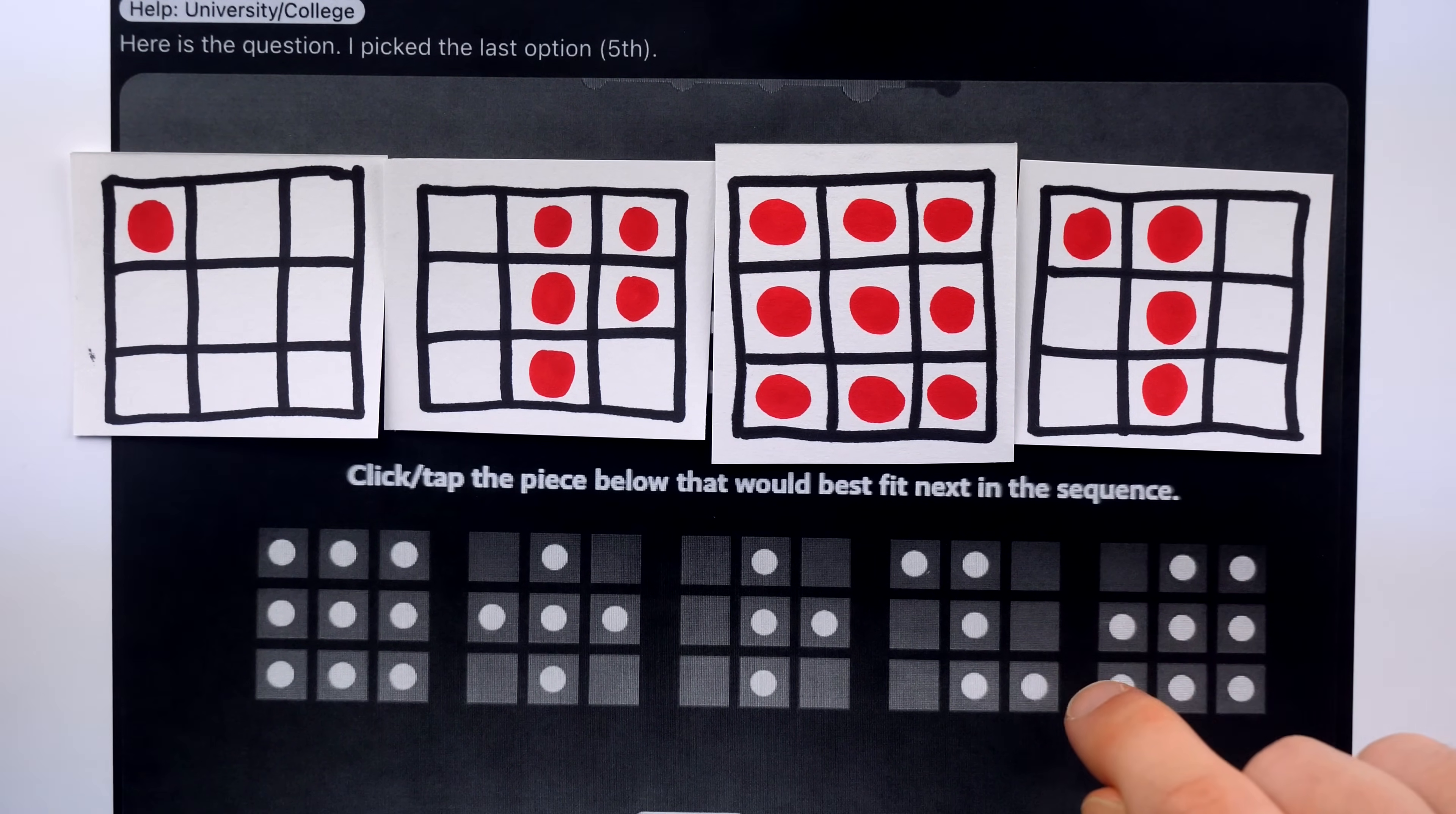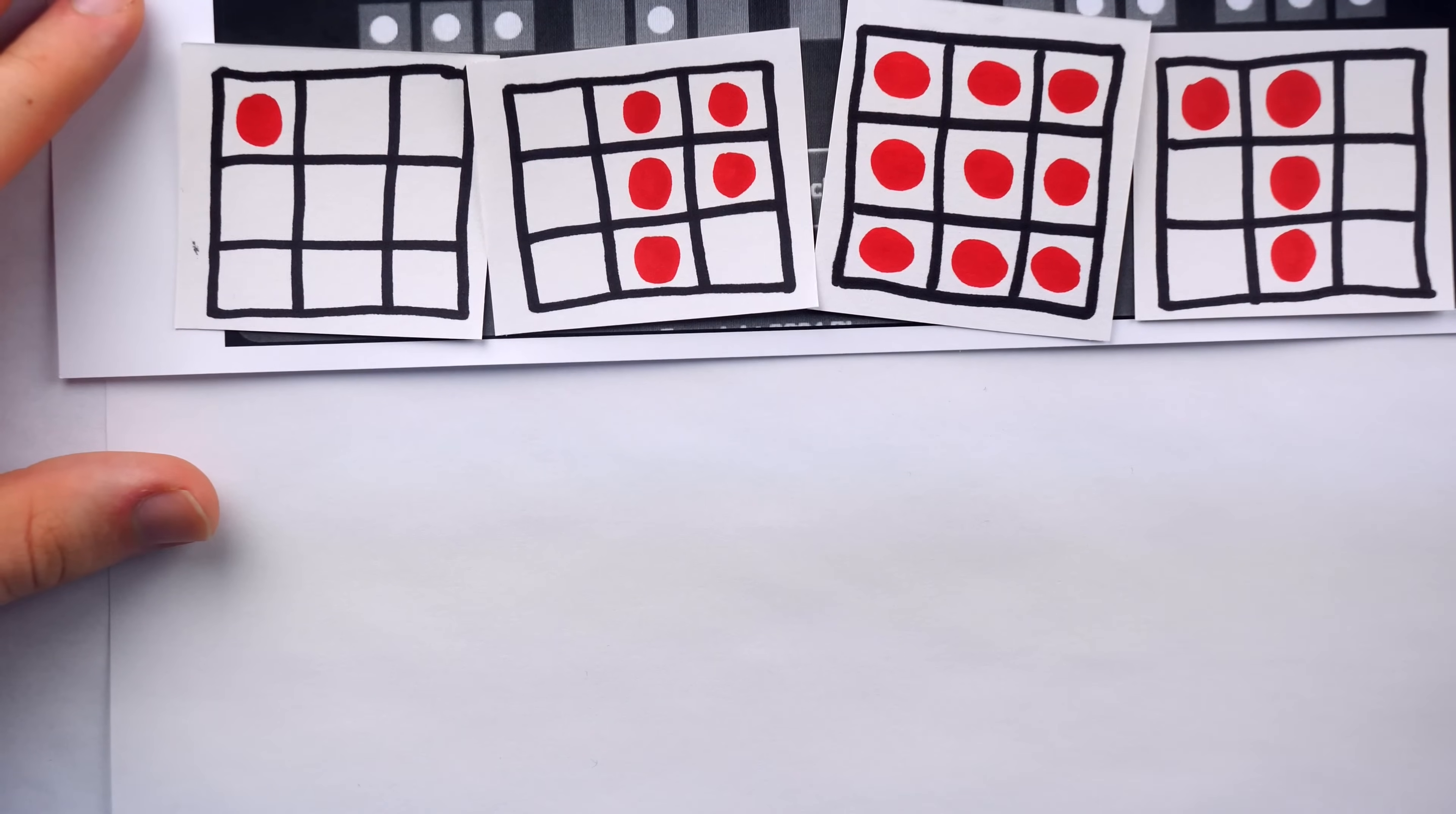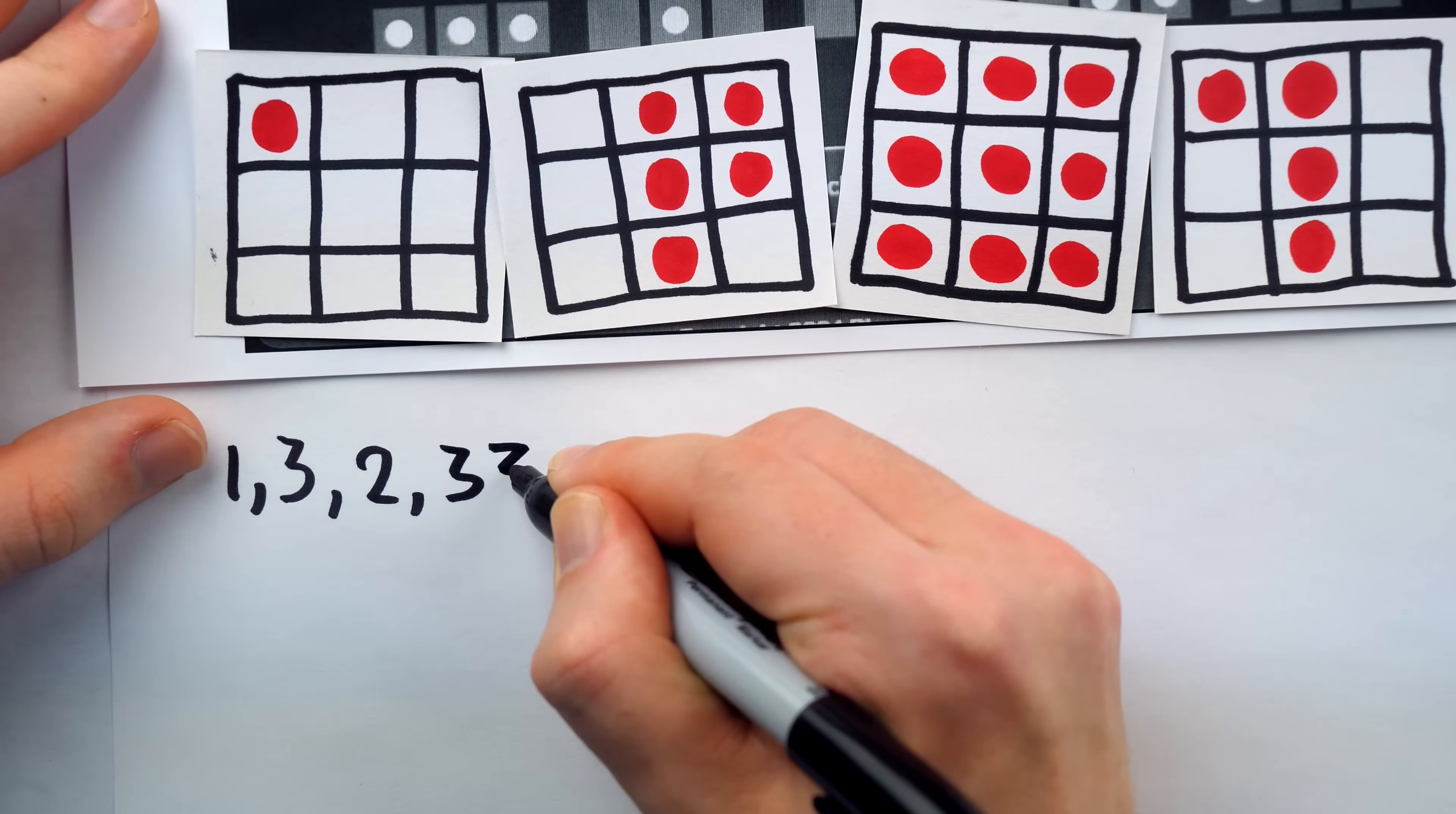Another way to justify the choice of option five here is to consider the sequence of the numbers of dots in the columns of the grids, while disregarding empty columns. By that, I mean this first column has one dot, the next column with any dots is this one, which has three dots, then we have two dots, then three, three, three, and then one, and then three.